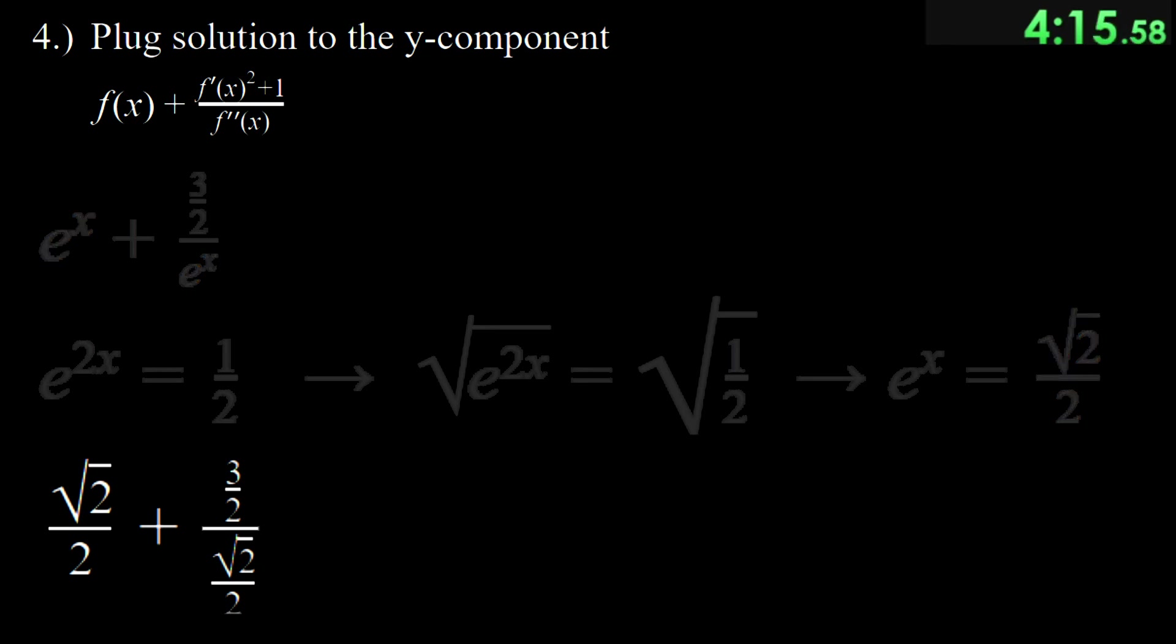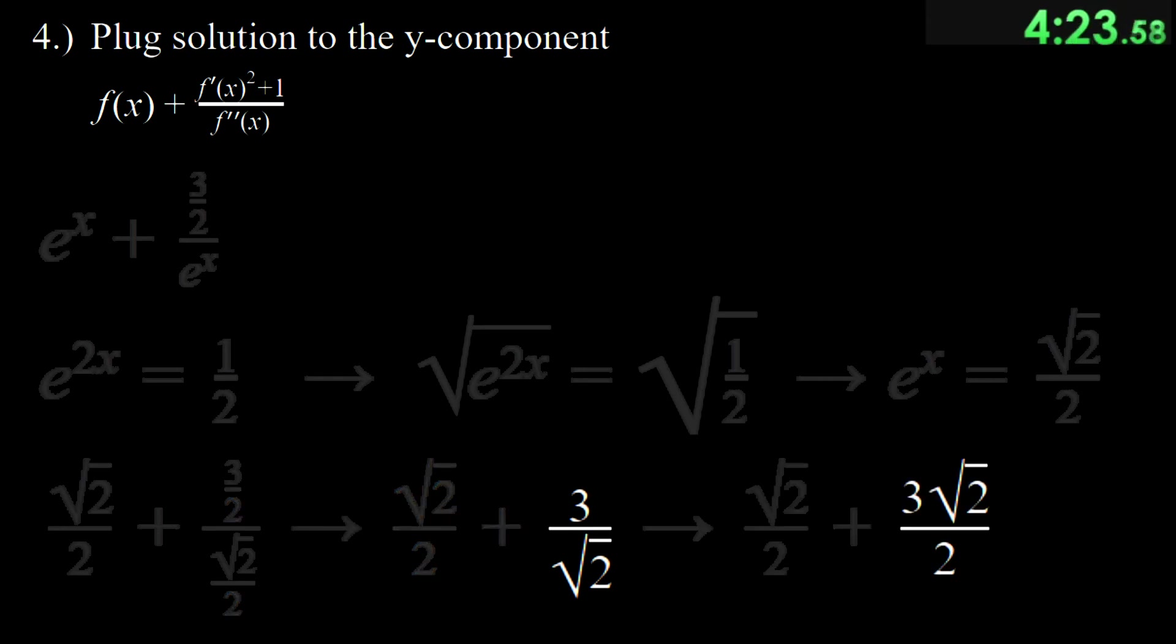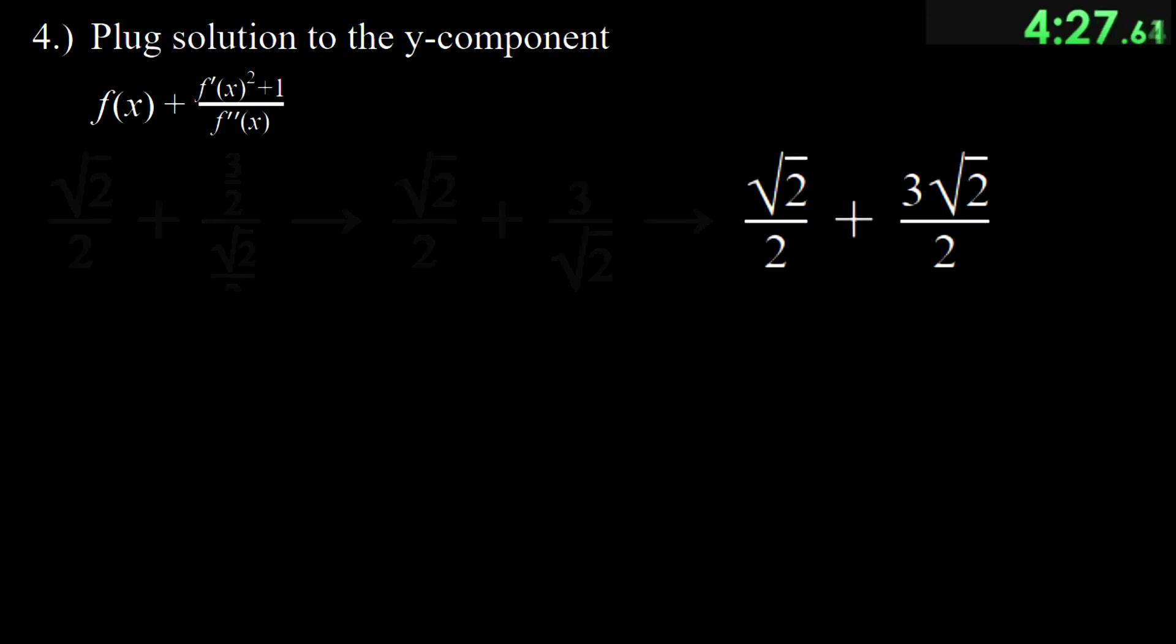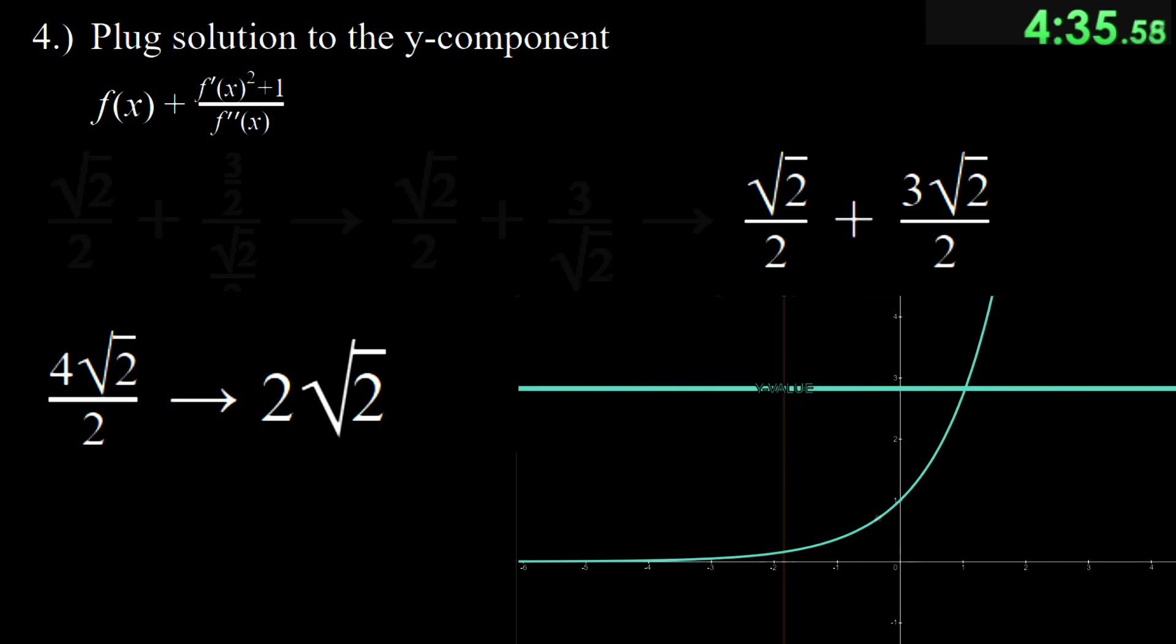Now, we simplify. Let's first get rid of the cancelling 2's. Then, we multiply the second term by root 2 to have a common denominator. Now, 3 root 2 and root 2 become 4 root 2 and the 4 divides by 2 making our y coordinate of that point 2 root 2. Cool.